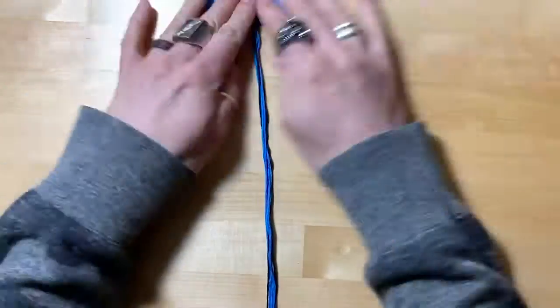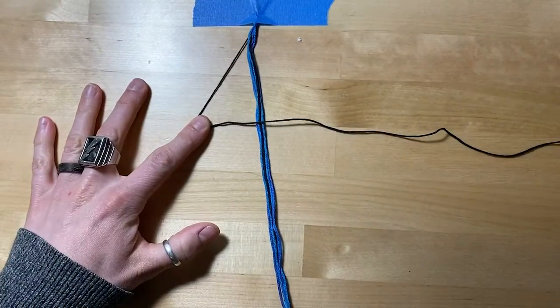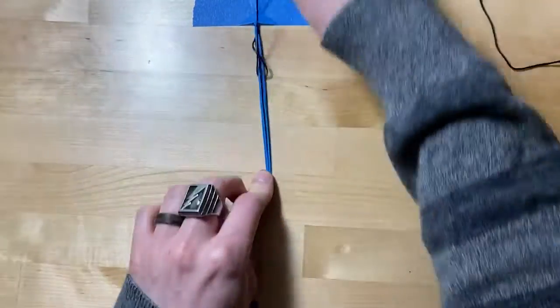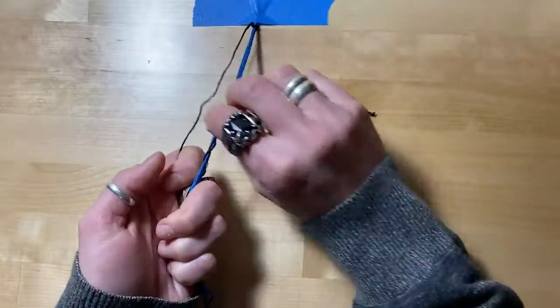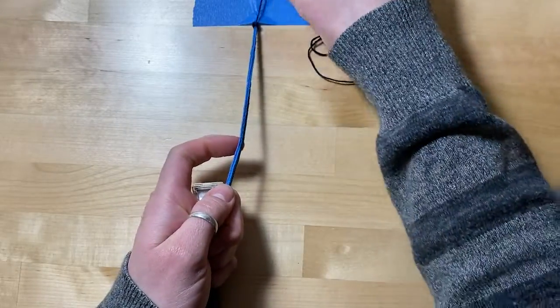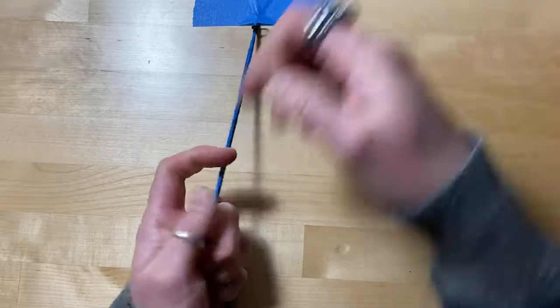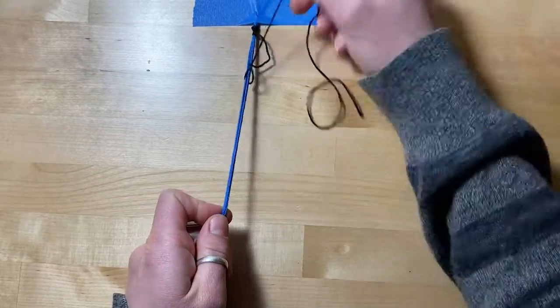Now we're going to make our knot. Taking whatever color you choose first, you're going to make a number four around the whole group and then tie that knot as many times as you want. I chose to do seven knots and then switch colors after that.